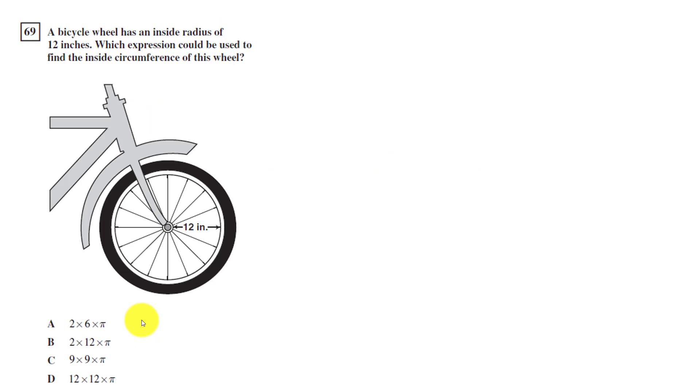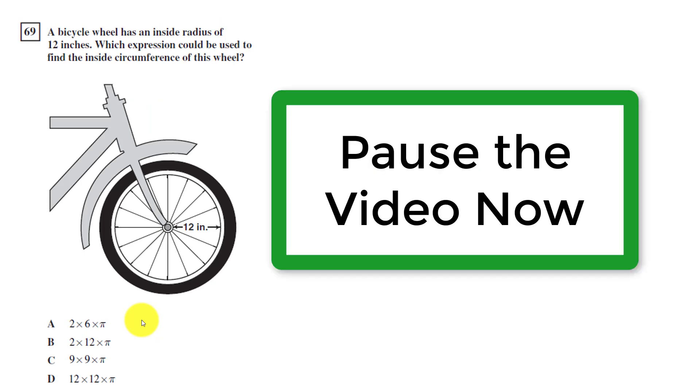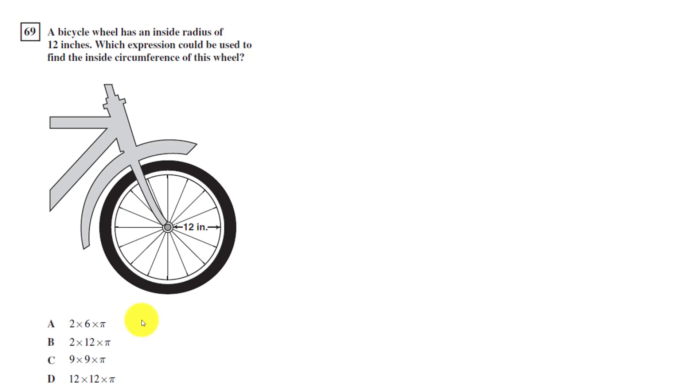Read this question carefully. Pause the video. Give it a try on your own. Then I'll explain. Now that you've read the problem, did you highlight the most important words? A bicycle wheel has an inside radius of 12 inches. So that radius term and the 12 inches are very important here. So a radius is this green line. It's half the distance across the circle, or the distance from the center to the outside of the circle.